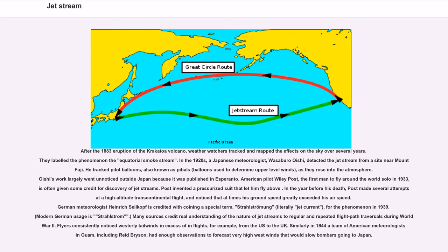After the 1883 eruption of the Krakatoa volcano, weather watchers tracked and mapped the effects on the sky over several years. They labeled the phenomenon the equatorial smoke stream. In the 1920s, a Japanese meteorologist, Wasaburo Oishi, detected the jet stream from a site near Mount Fuji. He tracked pilot balloons, also known as pie bulls, balloons used to determine upper-level winds, as they rose into the atmosphere.